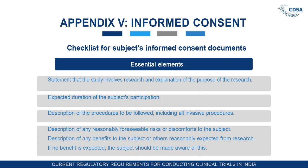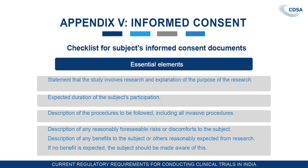Appendix 5 is regarding informed consent, also called the informed consent document. This consists of two parts: first is the patient information sheet — the data to be provided to patients or subjects — and the next is the informed consent or confirmation sheet where the subject has to sign. The checklist for the informed consent document lists its essential elements. The first is a statement that the study involves research and an explanation of the purpose of the research — the most important point is disclosing that the study is for research purpose only and not for any other purpose.